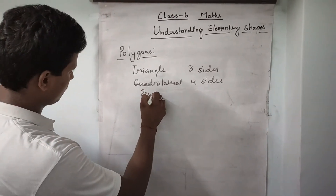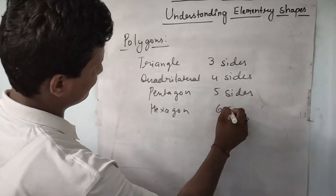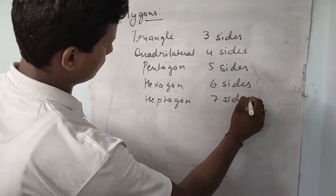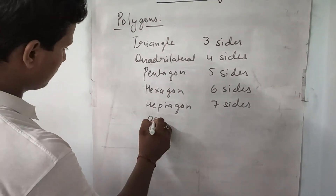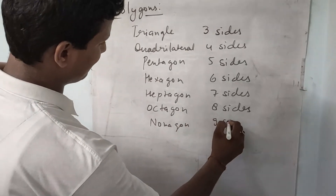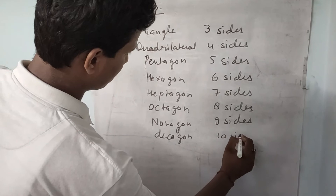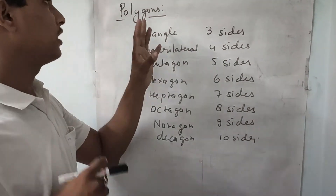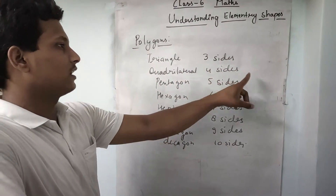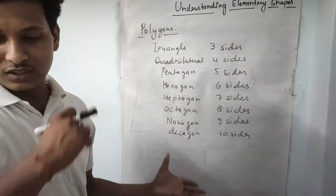Pentagon has five sides. Hexagon has six sides. Heptagon has seven sides. Octagon has eight sides. Nonagon has nine sides. And decagon has ten sides. We need to remember that a polygon has at least three sides — three or more sides. These are the different types of polygons.